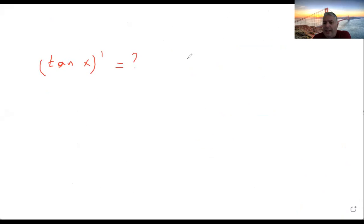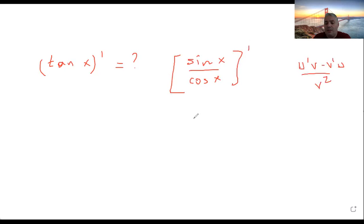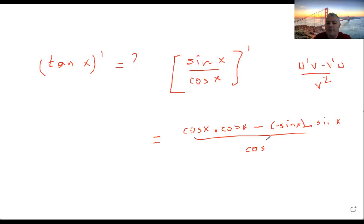Tangent of x equals sine of x over cosine of x — yes, of course. So we use the quotient rule: u prime times v minus v prime times u, all divided by v squared. So we get: derivative of sine of x, which is cosine of x, times the denominator, minus the derivative of cosine of x, which is negative sine of x, times the numerator, all divided by the denominator squared.